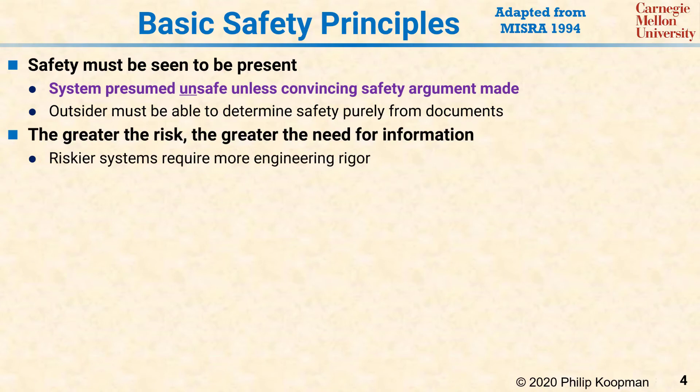Next, the greater the risk, the greater the need for information. That means that a system that is highly risky in terms of severe consequences or high likelihood of a significant mishap requires more attention to safety than a system that is more benign. Typically, the higher the level of risk, the more engineering rigor and resources must be applied to ensure safety.